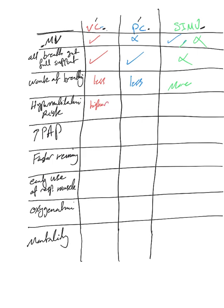Hyperventilation risk is higher in pressure control because every single breath — whether triggered by the patient or the ventilator — receives full support with that set tidal volume. In pressure control, if the patient is pulling high tidal volumes, there is a risk of hyperventilation. In SIMV, the risk is less because only the backup rate receives full support; the extra breaths receive only partial support.